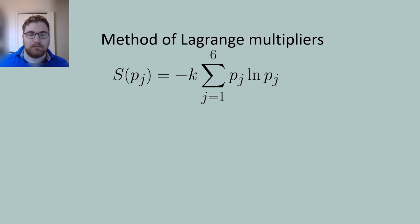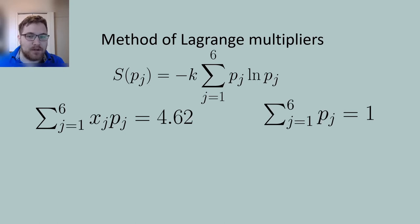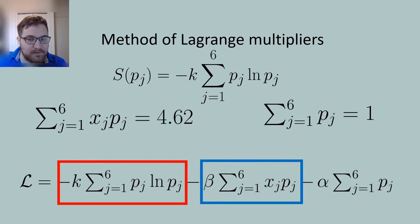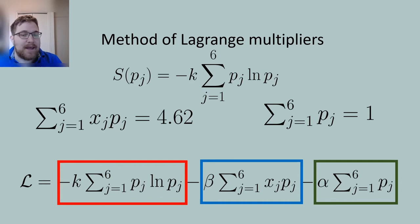So we are now ready to employ the Gibbs algorithm to our example, which will inform our discussion later for more physically motivated situations. To do this we use a method from calculus called the method of Lagrange multipliers and our definition of entropy. We use Jane's principle, that is we wish to maximize the Shannon entropy as given here under the constraints that the mean face value is 4.62 and the probabilities all sum to one. We accomplish this by introducing the Lagrangian function for our problem. In red we show the entropy, in blue the average face value, and in green the sum of all of the probabilities. Beta and alpha are called Lagrange multipliers and we will pick them in such a way that our resulting probability distribution agrees with our constraints.